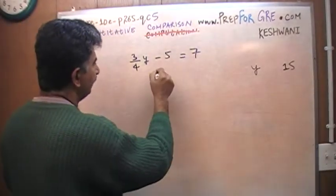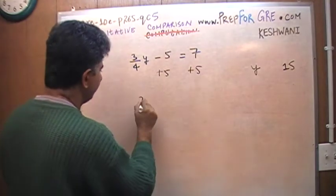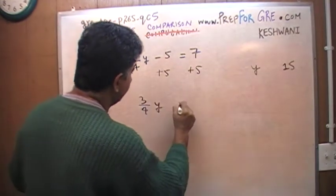Add 5 to both sides, add 5 to this side and 5 to this side, so you end up with 3 quarter y equals 12.